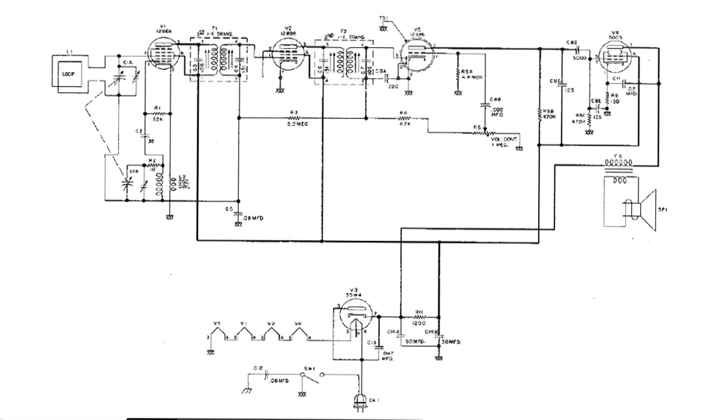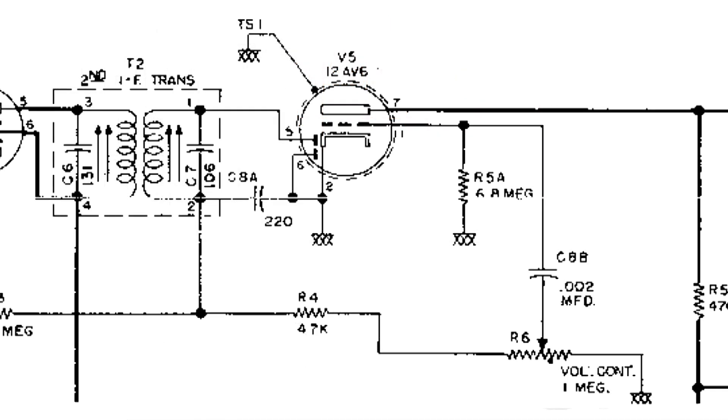This video is going to be about removing the 455 kilohertz intermediate frequency from the detected audio. This is a typical AA5, All-American 5 radio circuit, and the part of the circuit we're going to be looking at is right here. Here's a closer look, and this is the circuit that is involved in detecting and also removing the 455 kilohertz.